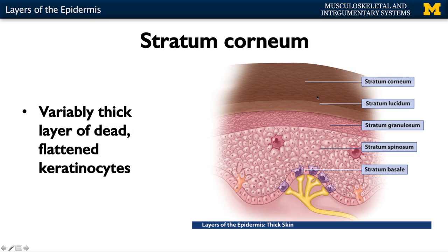The most superficial layer — what you can actually see on yourself and others — is the stratum corneum. Depending on the area of the body, this is variably thick, but all cells here are dead, flattened, or squamous keratinocytes. In this layer, the keratinocytes have a unique name: corneocytes. Depending on the area of the body, this layer can be between five and up to 50 cell layers thick, so the palms of your hands have a much more substantial stratum corneum.